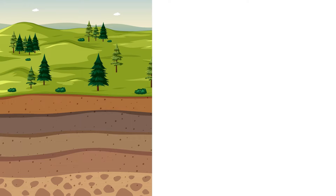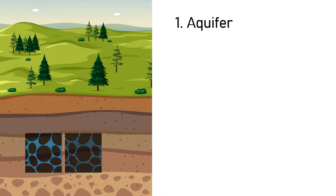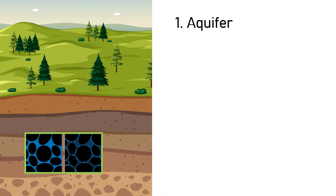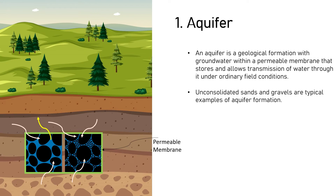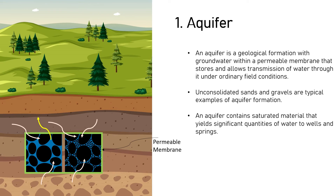An aquifer is a geological formation that allows both storage and transfer of water from it. The groundwater is stored within a permeable membrane that stores and allows transmission of water through it under ordinary field conditions. Unconsolidated sands and gravels are typical examples of aquifer formation. An aquifer contains saturated material that yields significant quantities of water to wells and springs.